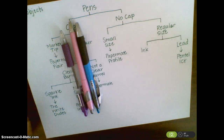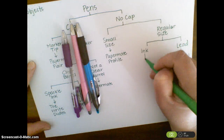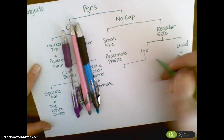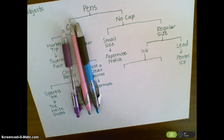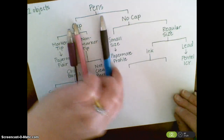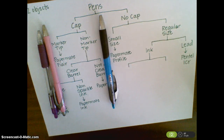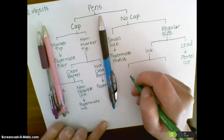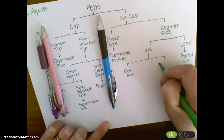Now I'm going to work with my last three ink pens and figure out how to sort them into two separate groups. This pen has gel ink, whereas these two have regular ink. So that's how I'm going to sort these pens: 'gel ink' and 'regular ink.'